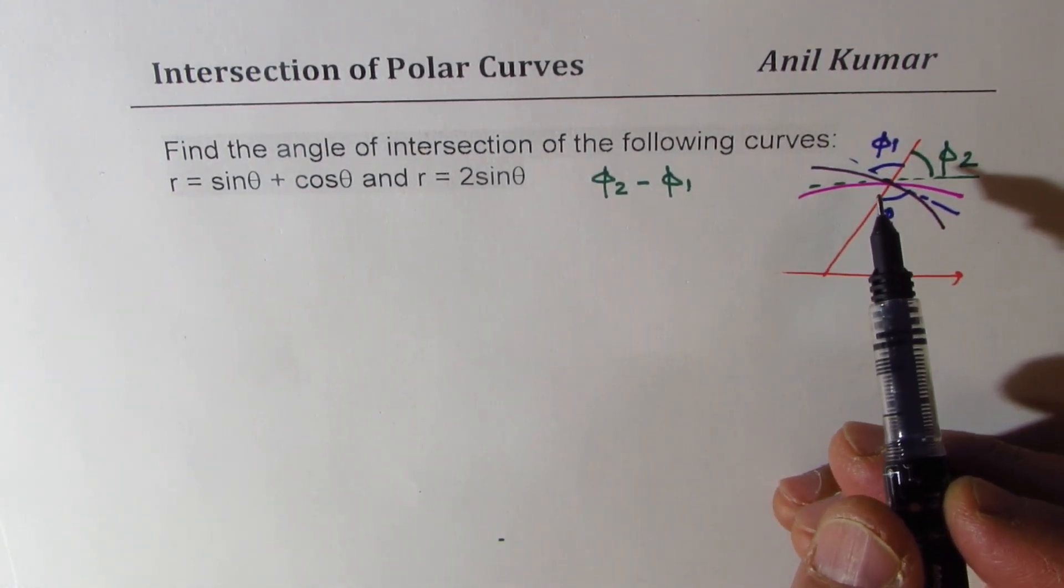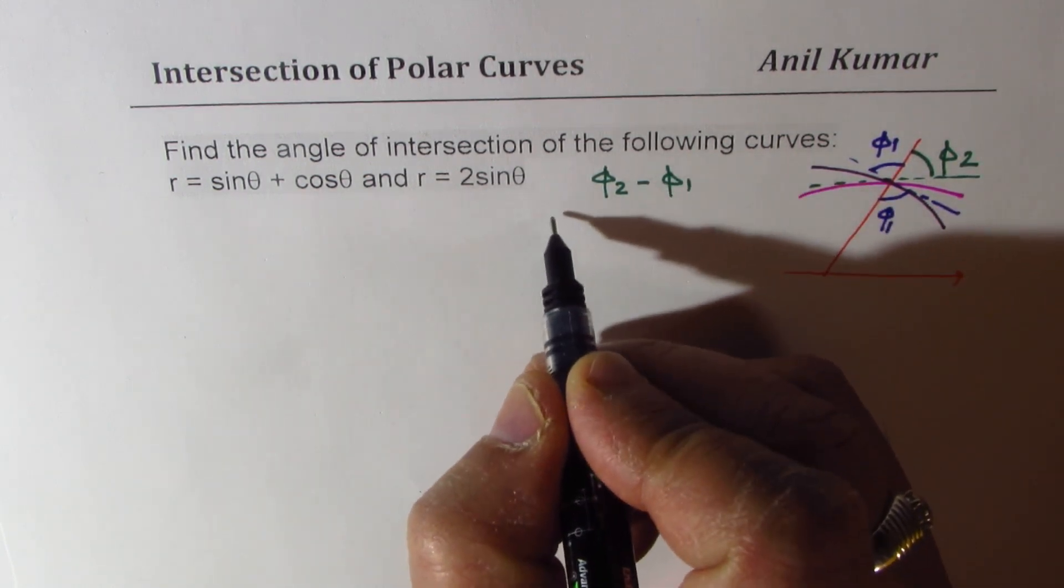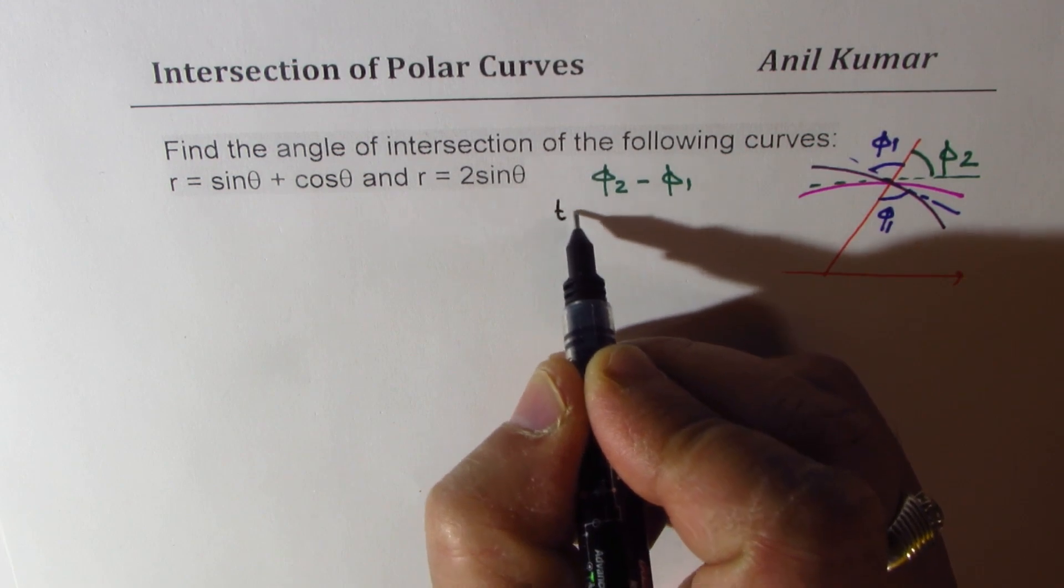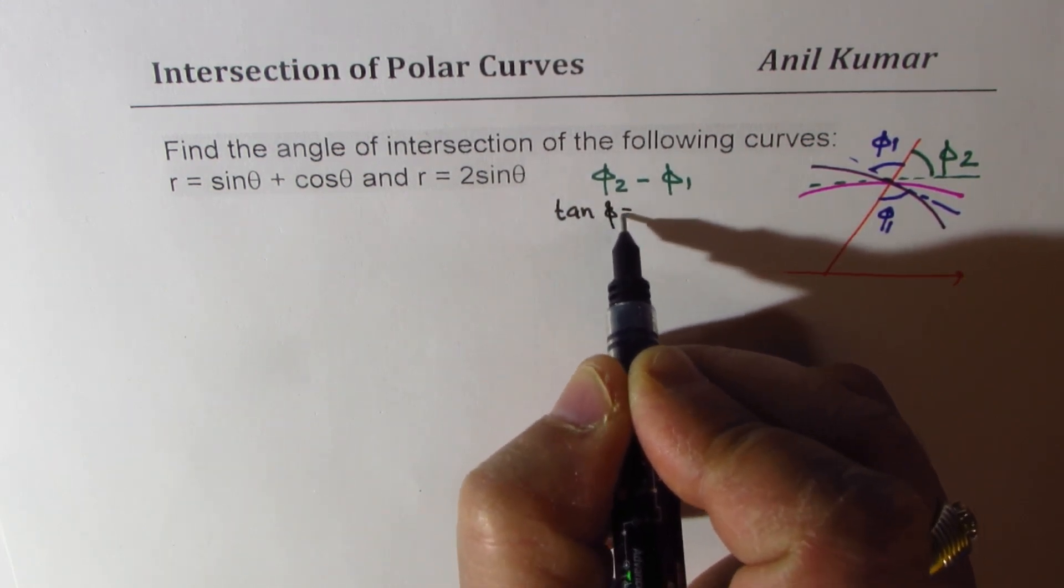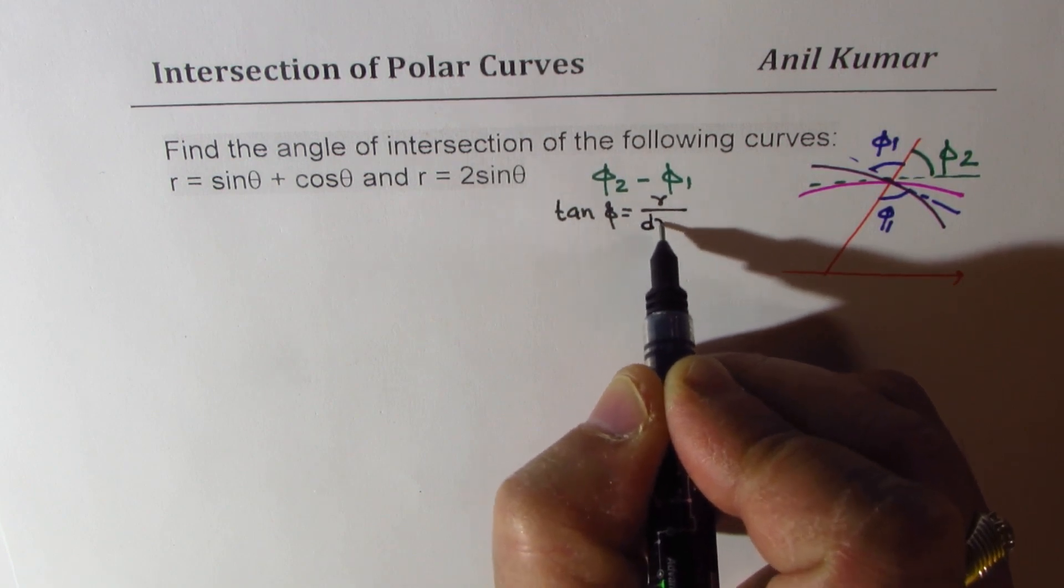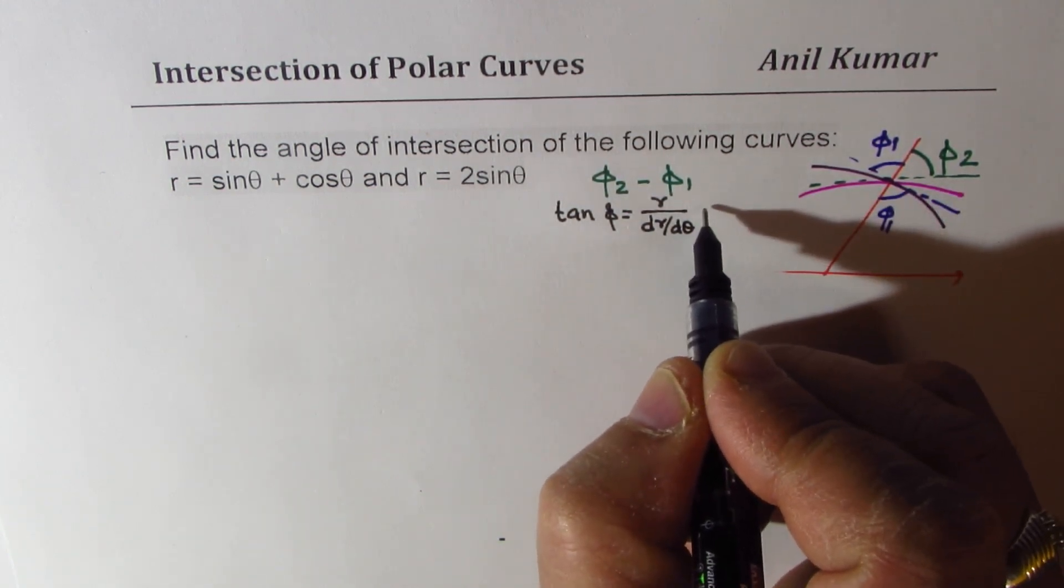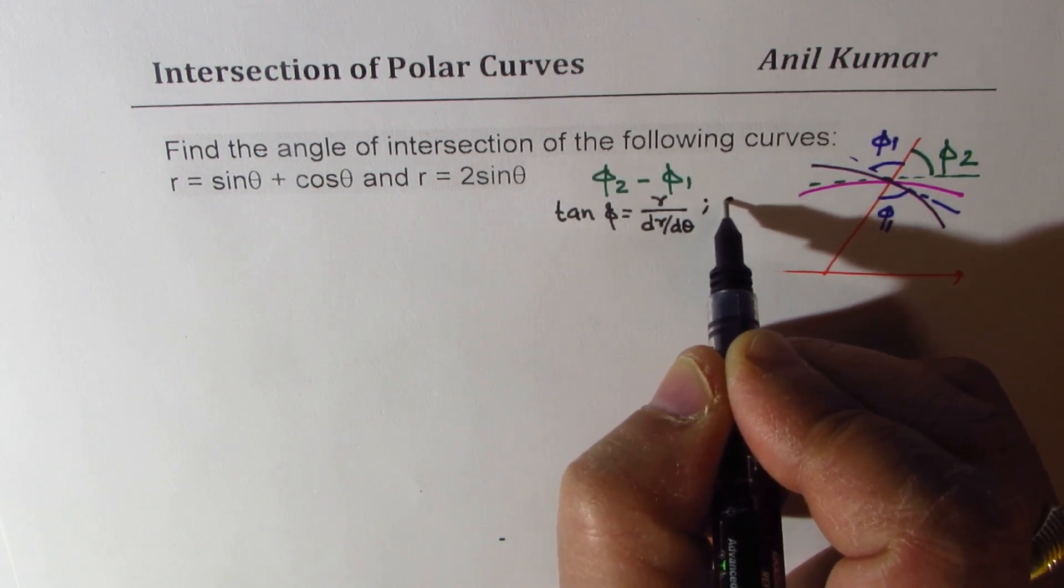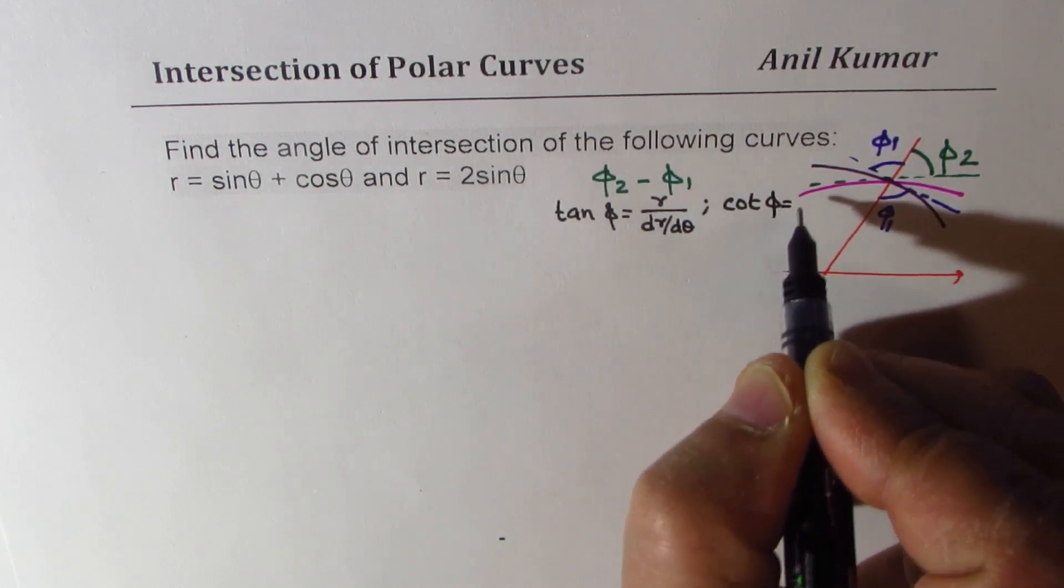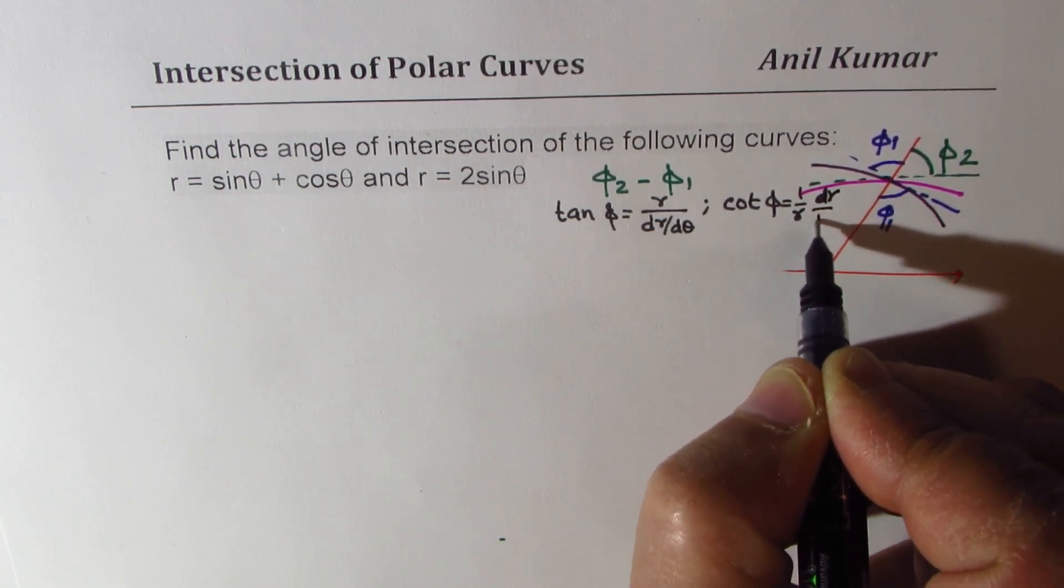which are the angles which radial vector makes with the tangent, we already know the formula, which is tan phi equals r over dr d theta, or we could also write this as cot phi equals 1 over r dr d theta.